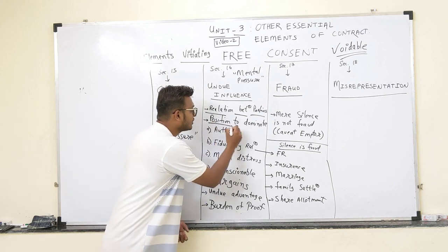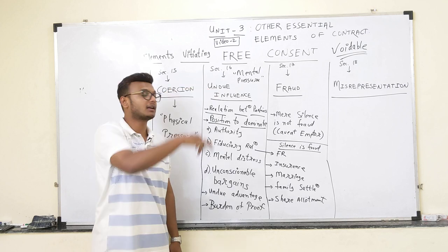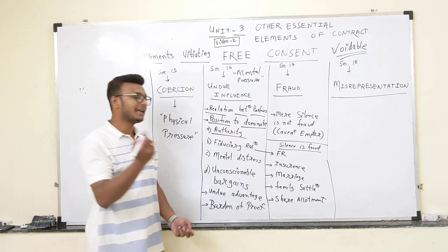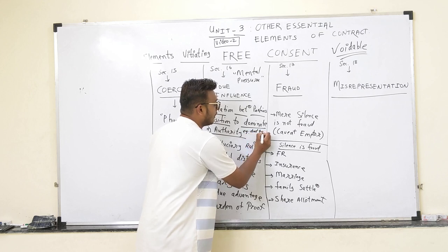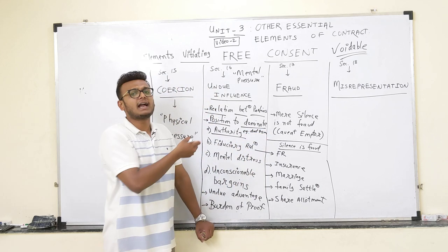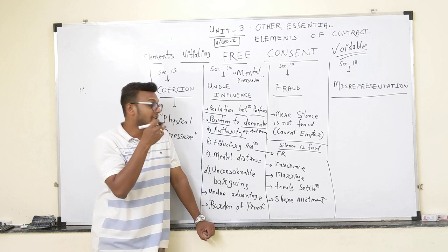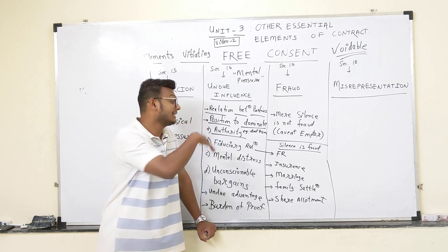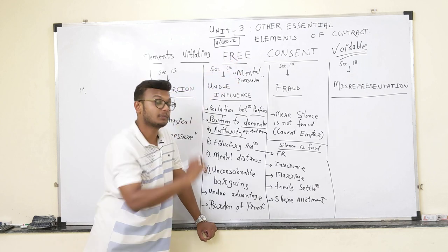Second essential: position to dominate. One party must have authority over the other. For example, dad and son — whatever dad says, the son will do; dad has authority. In this case, one party is dominating the other.